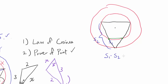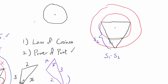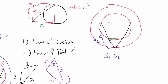We want S₁ times S₂. Recalling the power of a point: if a point is outside a circle and a line through it hits the circle at two points with near-segment A and far-segment B, then A·B equals the square of the tangent length C from that point. In our case A = S₁ and B = S₂, so S₁·S₂ = C². We just need to find the tangent length.